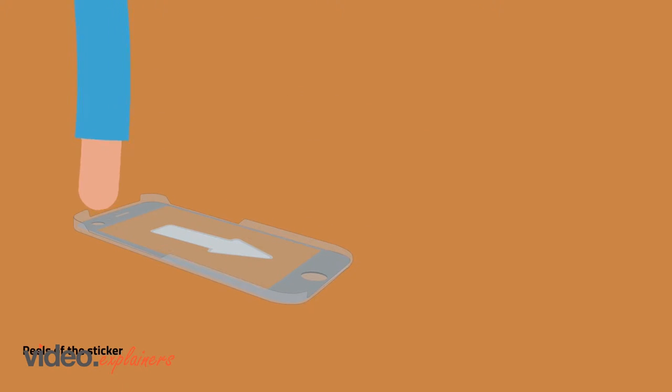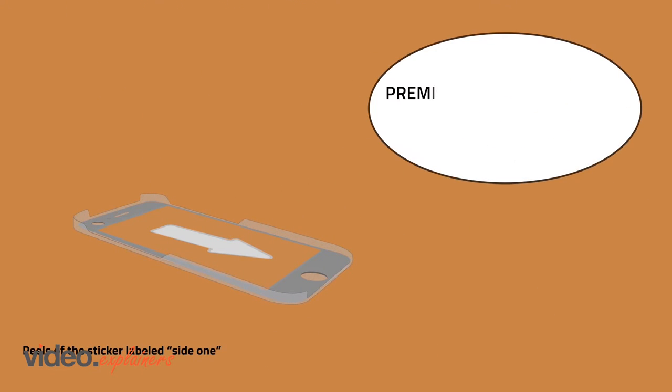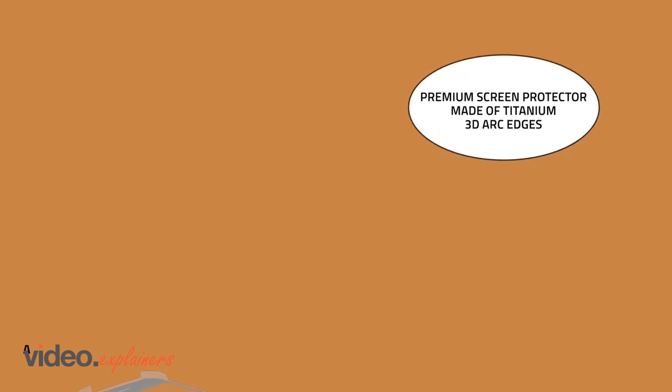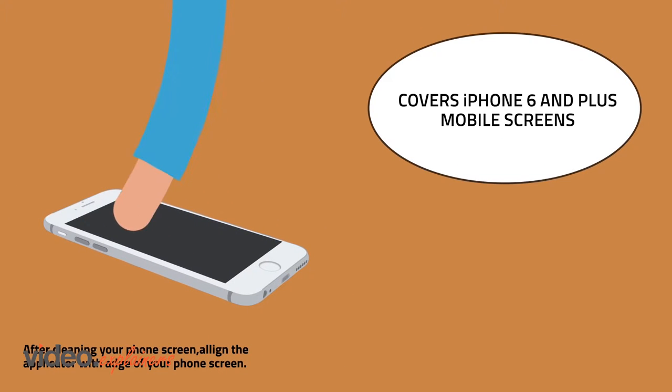The MoArmous Premium Screen Protector is made of titanium alloy with 3D arc edges that won't chip, and covers the full iPhone 6 and plus mobile screens.